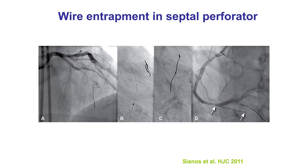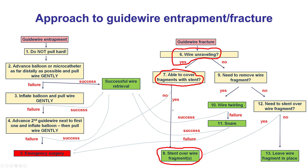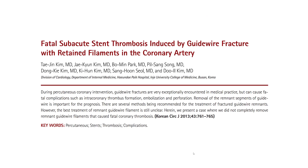Case four is a previously published case in which a guidewire became entrapped in a septal perforator branch and subsequently fractured, but the wire fragment remained inside the coronary artery and was successfully covered with stents without the need for surgery. In this case, the wire fractured and unraveled, but stents could cover it, preventing further problems.